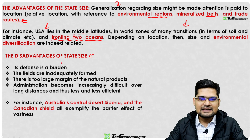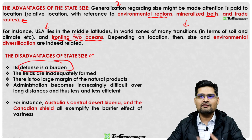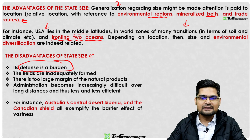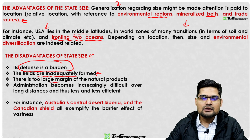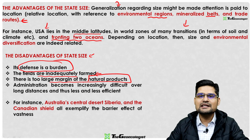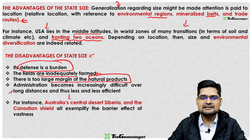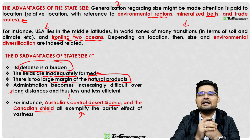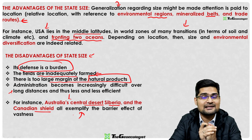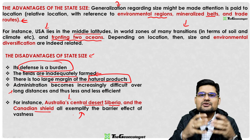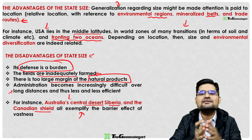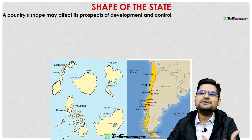Disadvantages of large size include defense becoming a burden, inadequately farmed fields, too large a margin for natural products, and persistent administrative issues. Australia's central desert, Siberia, and the Canadian Shield all exemplify the barrier effect of vast territories.